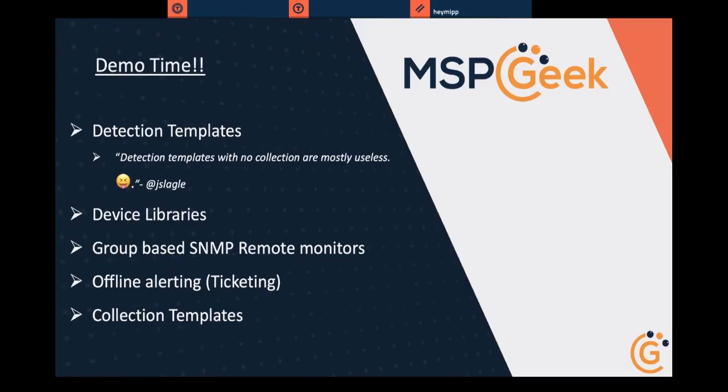Demo time — detection templates. Jay Slargle said about four days ago that detection templates with no collection are mostly useless. Well, I hope he's on the call because I'm going to prove him wrong. Then we're going to go into device libraries, group-based SNMP remote monitors. We're actually going to do standard device SNMP remote monitors first. Mendy said that Automate doesn't really do SNMP remote monitors well — I'm going to burn him too. Then offline alerting and ticketing, and if we get time, collection templates.